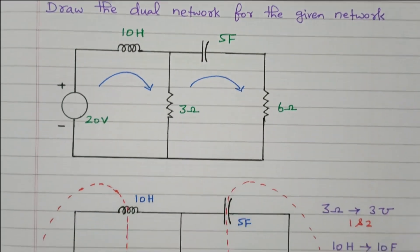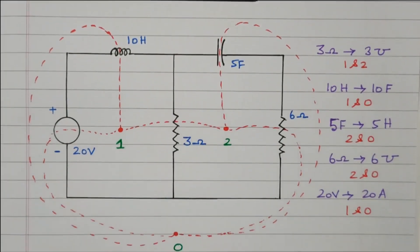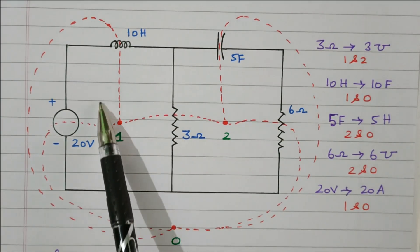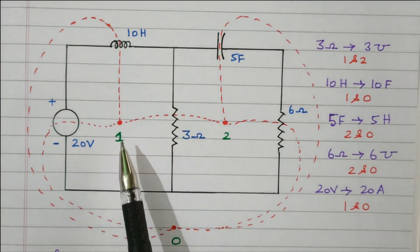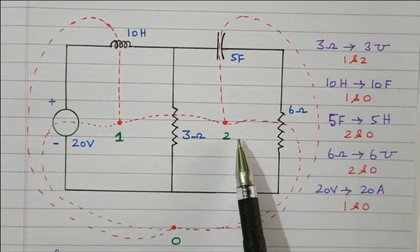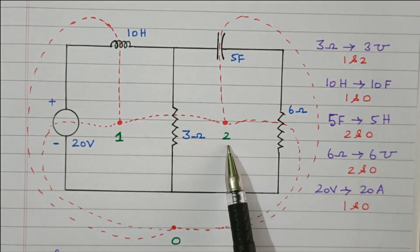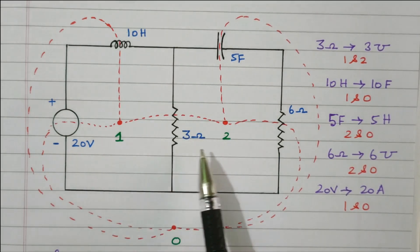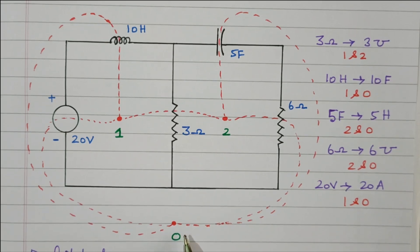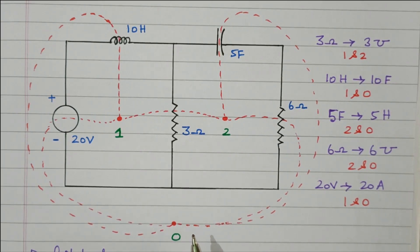Now we will go to the diagram. This is the dual network diagram. For the first loop, a dot is placed and numbered as 1. For the second loop, one more dot is placed, numbered as 2. So two dots are available: 1 and 2. And one more dot is placed outside the loop, called 0, as a reference loop.